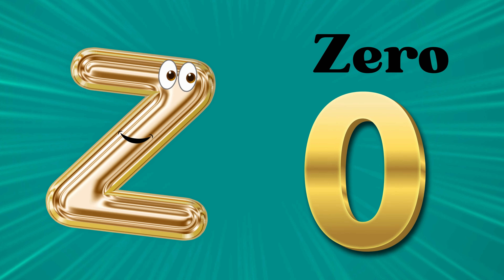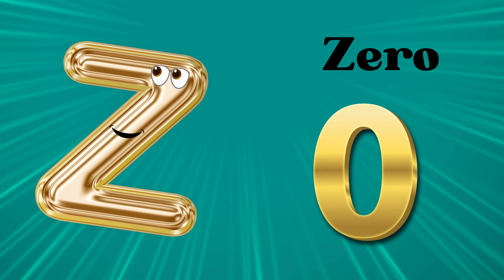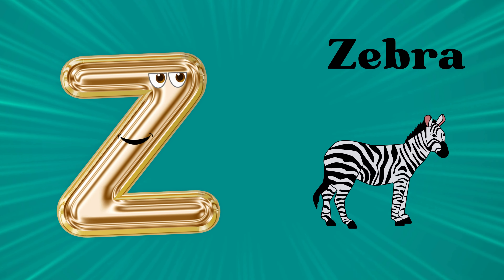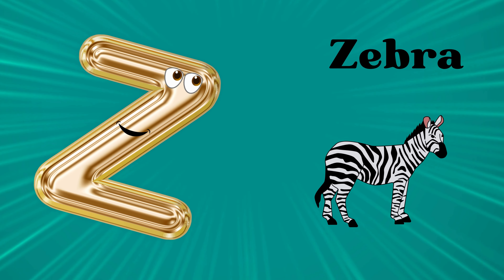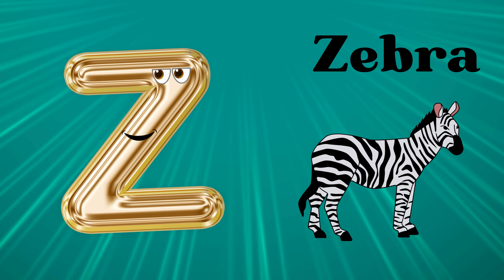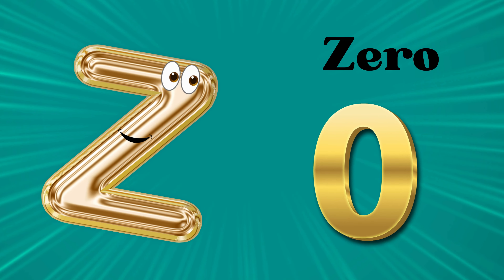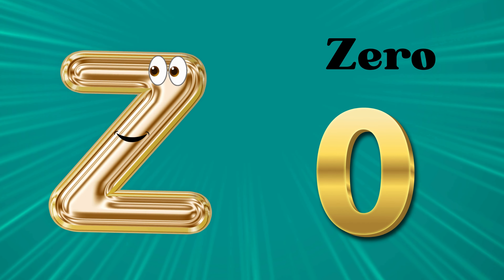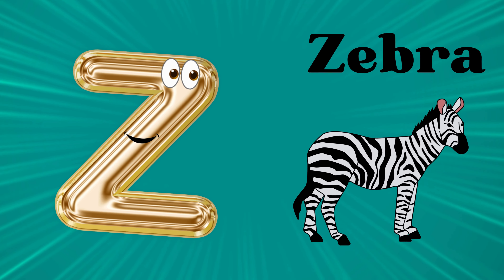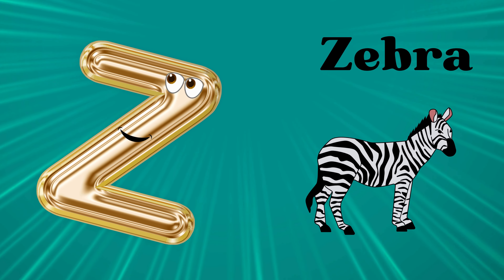Z is for zero, z-z-zero. Z is for zebra, z-z-zebra. Z is for z-z-z-z-zero. Z is for z-z-z-z-zebra.